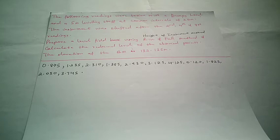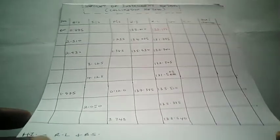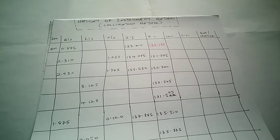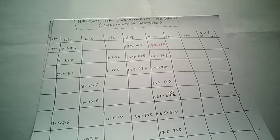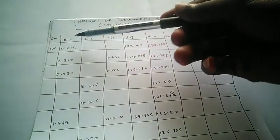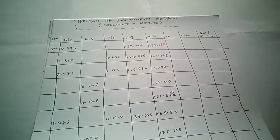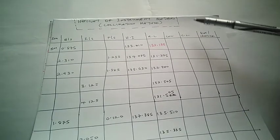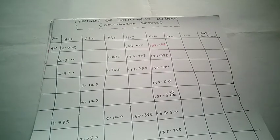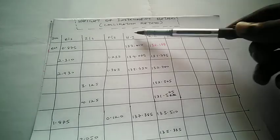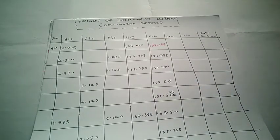I'm going to show us the computation sheet for the height of instrument method we are going to use today. You can see that there are still some elements common with the rise and fall method — we still have station, backsight, intermediate sight, foresight, reduced level, correction, corrected level, and remarks. The major difference is the introduction of the height of instrument column, which replaces rise or fall.